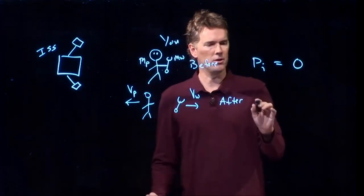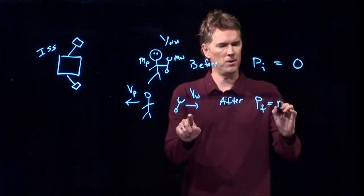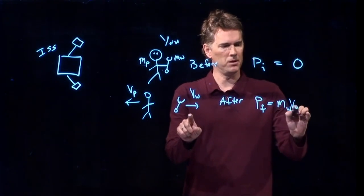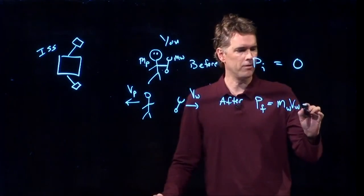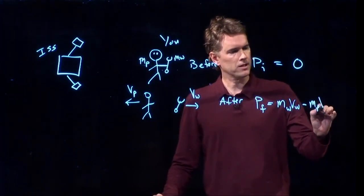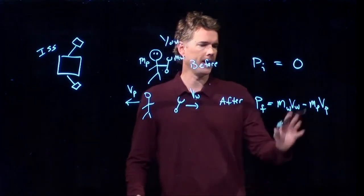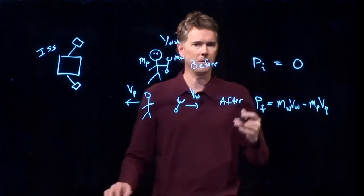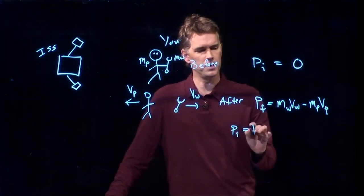And now in the after picture, we're going to have the mass of the wrench times the speed of the wrench going to the right. We can call that the positive direction. But we have the mass of the person times the velocity of the person in the other direction. We can call that negative. And so now we can set them equal, right?